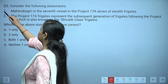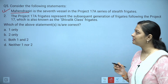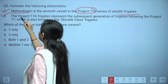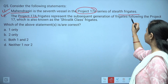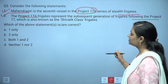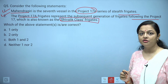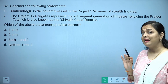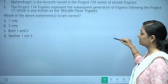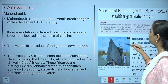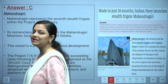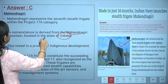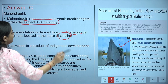The last question: Statement one — Mahendragiri is the seventh vessel in Project 17A series of stealth frigates. Statement two — Project 17A frigates represent the next generation of frigates following Project 17, also known as the Shivalik class frigates. Which are correct? Answer is option C — both statements are correct. Mahendragiri is named after the Mahendragiri mountain in Odisha and is the seventh stealth frigate within the Project 17A category.